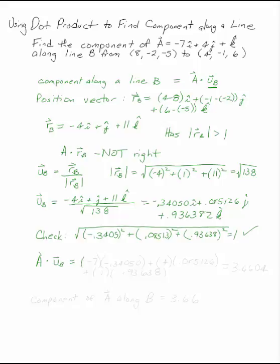which in this case is -7 and -0.34050, and add it to the product of the j components. That's 4 times 0.085126, and the product of the k components,